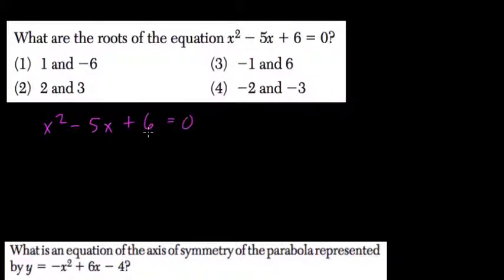is to find factors of the c term, that's this term, that add up to your b term. So in this case, what factors of 6 add up to negative 5?